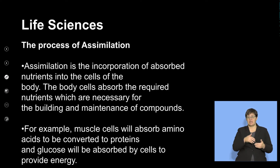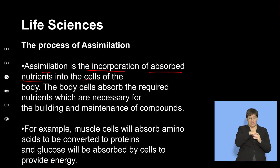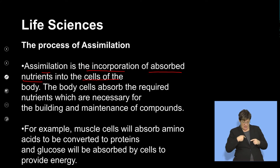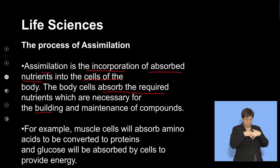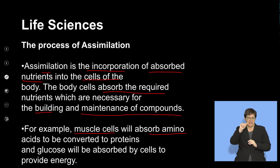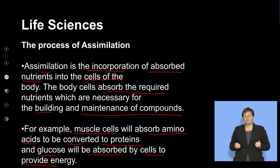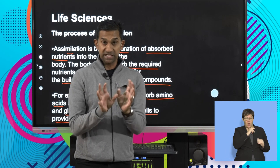The process of assimilation is absorbing nutrients into cells and producing complex molecules based on the body's needs. Assimilation is the incorporation of absorbed nutrients — the building blocks — into the cells of the body. For example, muscle cells absorb amino acids from the bloodstream and convert them into proteins that repair and regenerate muscles. Glucose is absorbed by cells and provides the mitochondria with energy for cellular respiration, producing ATP for cellular metabolism.